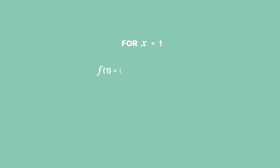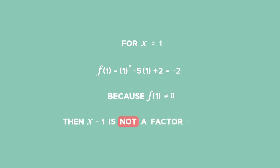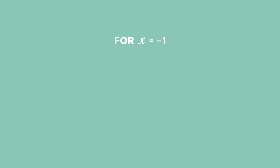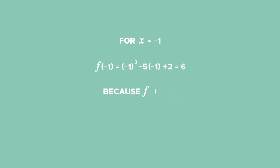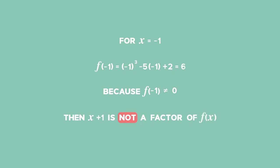For x equals 1, we get f of 1 equals 1 cubed minus 5 times 1 plus 2, which equals negative 2. Because the answer is not equal to 0, therefore x minus 1 is not a factor of f of x. For x equals negative 1, we obtain f of negative 1 equals negative 1 cubed minus 5 times negative 1 plus 2, which equals 6. Because the answer is not equal to 0, therefore x plus 1 is not a factor of f of x.